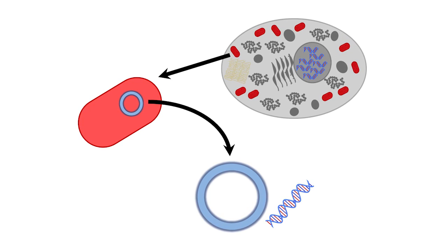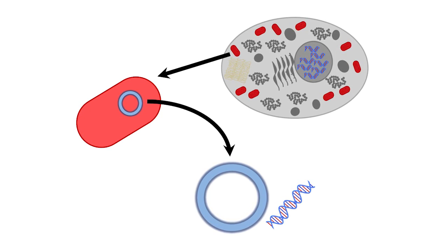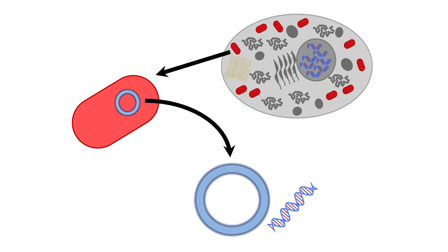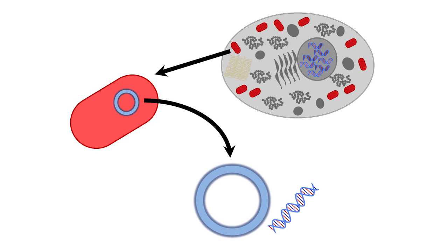Genetic disorders that are caused by differences in the mitochondrial DNA can only be passed from mother to child. Fathers do not pass mitochondrial DNA to their children.